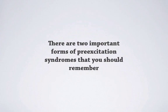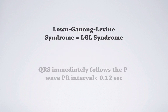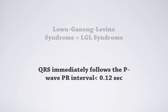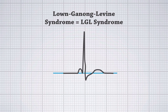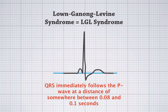There are two important forms of pre-excitation syndromes that you should remember. First, there's the so-called Lown-Ganong-Levine syndrome. In this syndrome, the QRS immediately follows the P wave and the PR interval is below 0.12 seconds. As you can see, the QRS immediately follows the P wave at a distance of somewhere between 0.08 and 0.1 seconds — so that's definitely too short. The impulse is traveling through an accessory pathway from the atria to the ventricles, conducting faster than the AV node, which is why the PR interval is shortened.